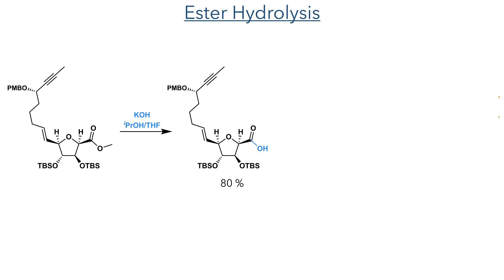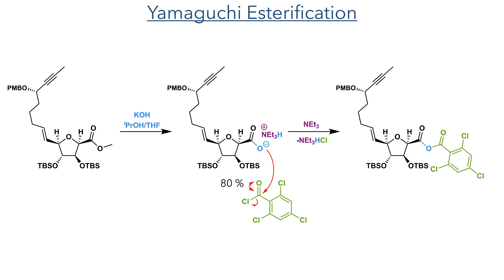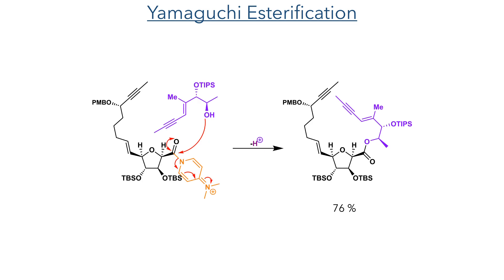Taking this compound forward, the ester was hydrolyzed using potassium hydroxide in isopropanol and THF, and the resulting carboxylic acid then took part in a Yamaguchi esterification. It is firstly deprotonated by triethylamine, and the carboxylate then attacks trichlorobenzoyl chloride to form a mixed anhydride. This is then attacked by DMAP, and the resulting activated ester is attacked by the alcohol of fragment 3 to form the target ester in a 76% yield.